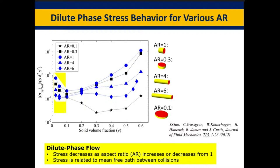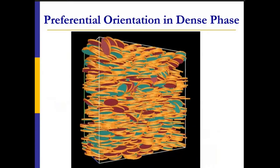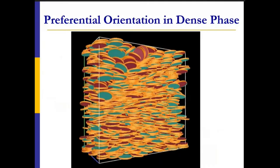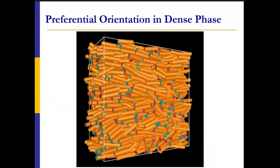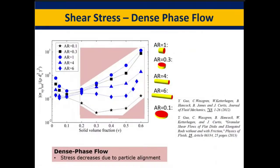Increasing asphericity decreases the kinetic or translational contribution to stress. In the dense phase, particles start to get a preferred orientation — they tend to align in the direction of the shear, as we see with disks and cylinders. This alignment makes it easier for particles to glide past each other, so flowability increases and stress decreases with increasing asphericity in the dense region. If the surface is very rough, the trend could be reversed due to increased collisional frequency, but for smooth, highly elongated particles, preferred orientation leads to decreased stress.